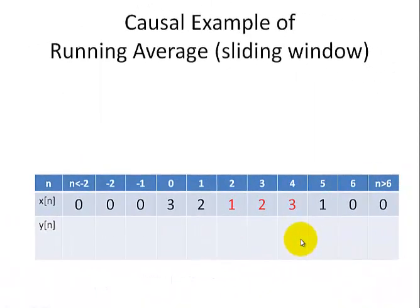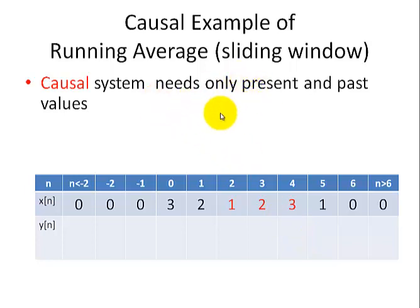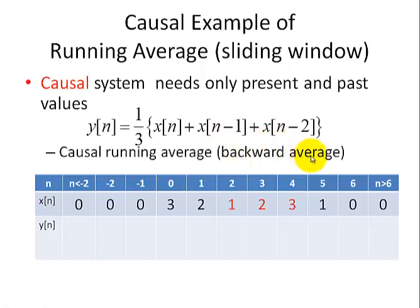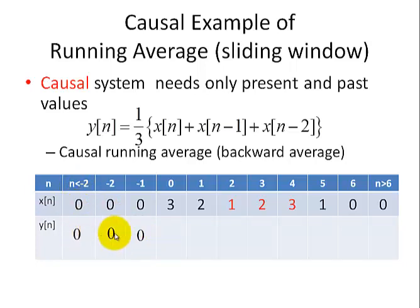Here's an example of a causal running average filter, in which the causal system only needs the present and past values — specifically the present value and the two past values. This is also known as a backward average filter. The first three output values are 0 because we're using not only the current value but also the two past values, and x(n) is also 0 for n less than negative 2. For n equals 0, we have 3 plus the two past values of 0, so 3 divided by 3 gives an output of 1. At n equals 1, we add 2, 3, and 0, giving 5/3.